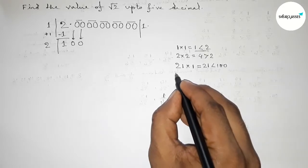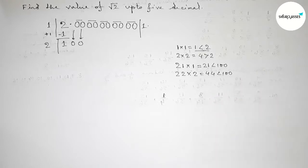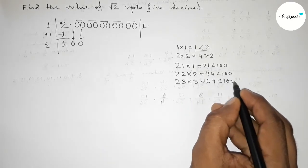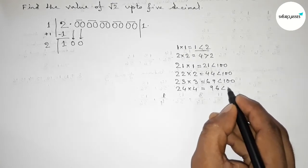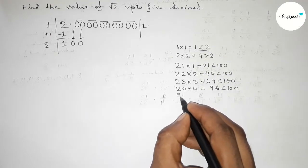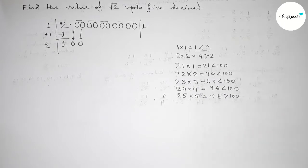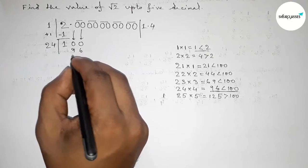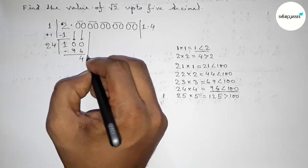If we try 2, then 22×2=44, less than 100. If we try 3, then 23×3=69, less than 100. If we try 4, then 24×4=96, less than 100. If we try 5, then 25×5=125, which is greater than 100. So we take 4. Write 4; 24×4=96. Subtract: 100−96=4.